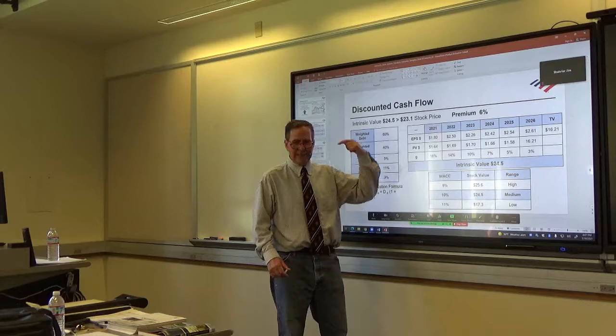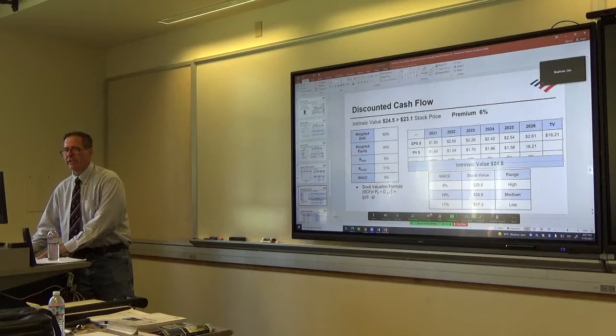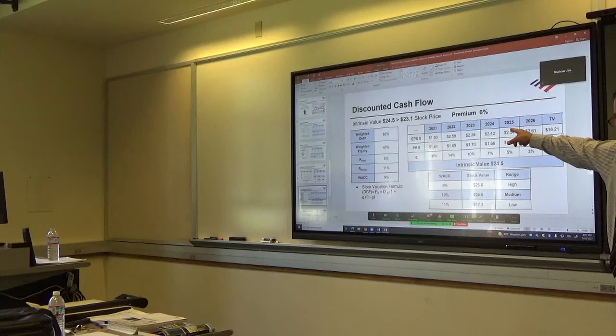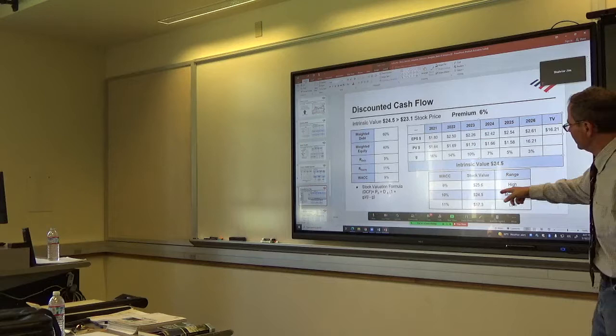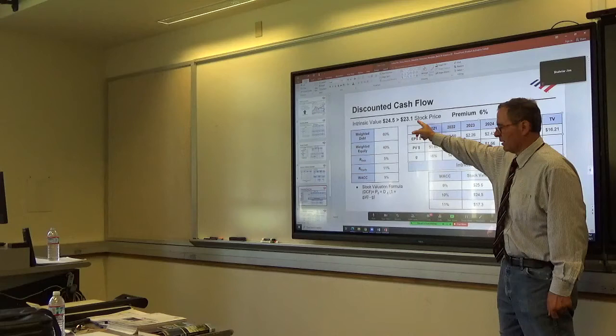Then what we did was the discounted cash flow approach. We did next year's EPS, five-year holding period, projected out one more year, because you've got to go to the sixth year to calculate the terminal value. Add the terminal value of the share to the fifth year earnings per share, discounted back at the discount factor, 1.1 to the fifth power, do it for each one of these, to get the present values, add up the present values to get the intrinsic value, compare it against the current stock price to get the premium.